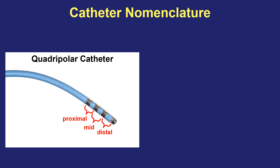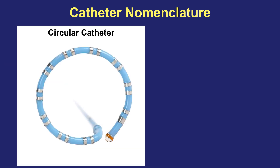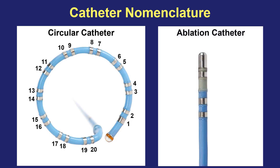For a simple quadrupolar catheter, we sometimes talk about pairs of electrodes as the distal, mid, or proximal pair. A high right atrial catheter might be labeled HRA-D for the distal pair, or a His bundle catheter labeled HBE-M for the middle pair. For catheters with many more than four electrodes, we deal with numbers: in a 20-pole catheter you'll see labels like DUO-1-2 or DUO-9-10 to indicate which pair of electrodes you're dealing with. Similarly for a circular catheter, even though it's a circle it still has an end, and electrodes are numbered from the distal end starting at one. Ablation catheters are quadrupolar with pairs labeled ABL-D for the distal pair including the ablation electrode itself; for unipolar recordings, electrodes are numbered one through four.